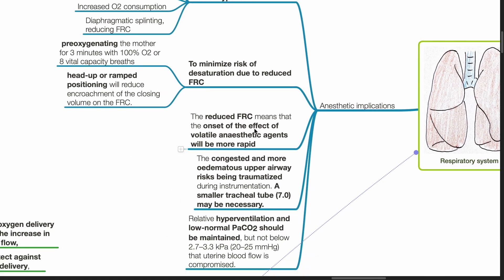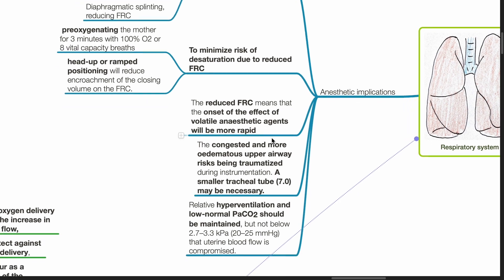The reduced FRC means that the onset of the effect of volatile anesthetic agents will be more rapid. Congested and more edematous upper airway risks being traumatized by instrumentation. A smaller tracheal tube may be necessary. Relative hyperventilation and low normal PaCO2 should be maintained but not below 20-25 mmHg so that uterine blood flow is not compromised.